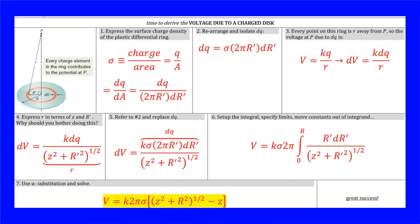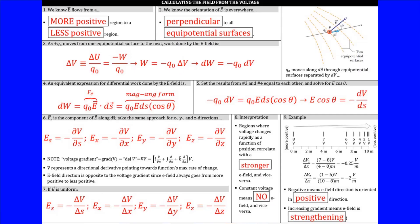Let's now continue to a two-dimensional charge surface — time to derive the voltage due to a charged disk. We're very interested in charged disks because they are part of capacitors. Box seven gives us the net result for the voltage existing at point P, which is a distance Z away from a charged disk.